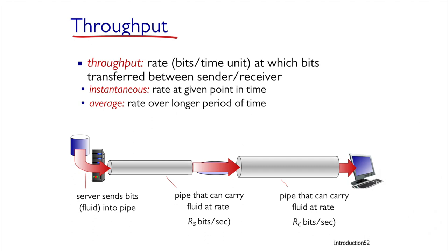What is throughput? Throughput is defined as the rate data arrives between two hosts — that is, from sender to receiver. Throughput refers to the receiver host and therefore includes all delays existing on the route from sender to receiver. We measure throughput as a unit of volume relative to a unit of time, for example, the number of bits per number of seconds. There are two kinds of throughput: instantaneous throughput, the rate at a particular moment, and average throughput, which is the average of instantaneous throughputs over time.